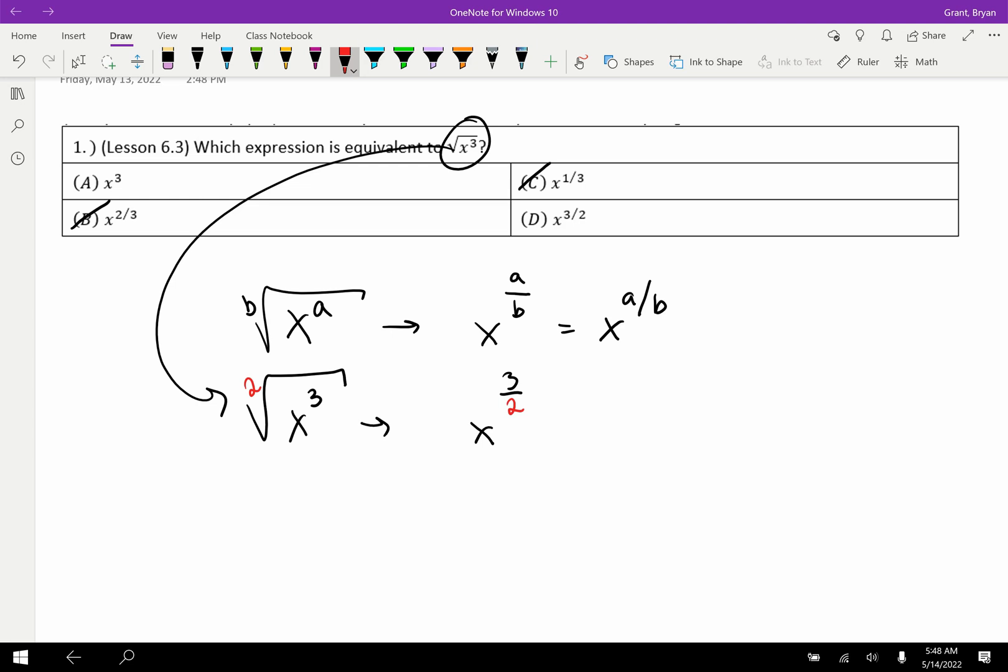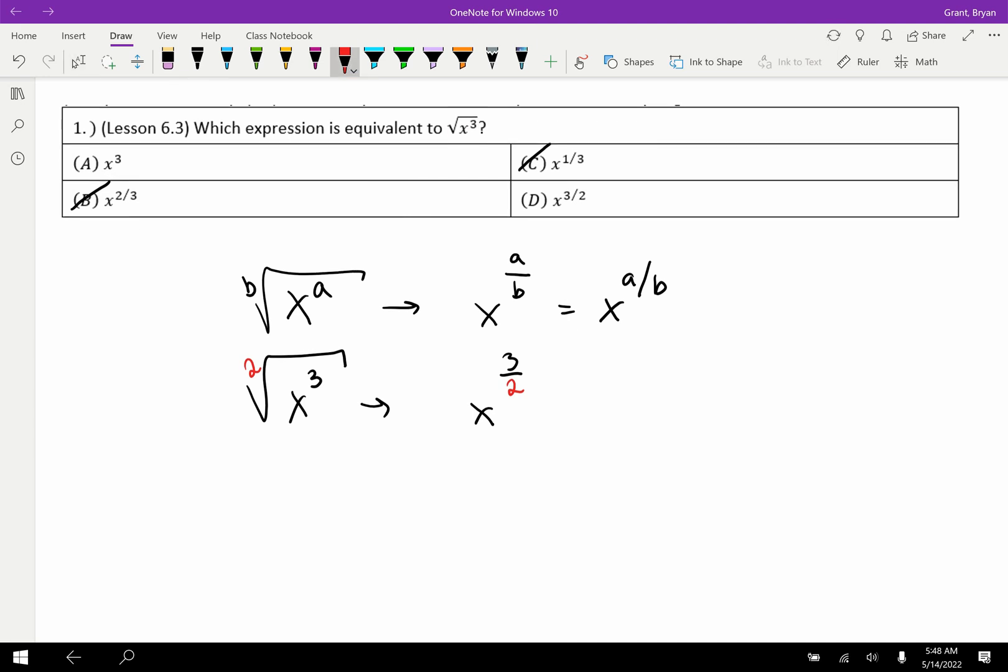Another way to determine this is you could actually use your calculator. Now remember, your calculator can't do x, right? Anytime you see an x, don't try to plug it into your calculator. But what it can do are numbers. So what we could try on our calculator is you could pick a number. It doesn't matter what. I'll just pick the number 5 because I know 5 is going to give us a gross decimal, but that's okay. So if I wanted, I could try the original problem first and I could say, what is the square root of 5 cubed? And then I'm going to take the answer. Our answer is d over here, and I'm going to say, what is 5 to the 3 over 2 power? And I'm going to compare those.